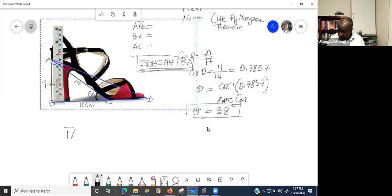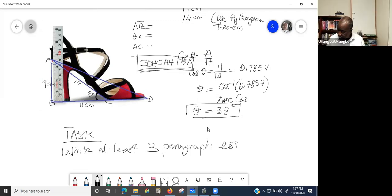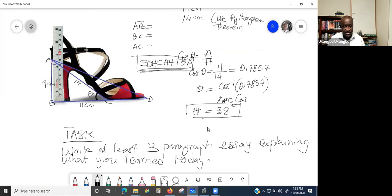So the task is write at least a three-paragraph essay explaining what you learned today. Mr. Ukule? Yes, can we do two paragraphs? No, we did two before, so we are going to do three this time around. The next time we are going to do this type of thing, it's going to be four paragraphs. So you're not solving any new problem. No new problem. So let me just explain the one we saw, but let it be in form of essay.